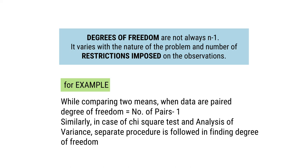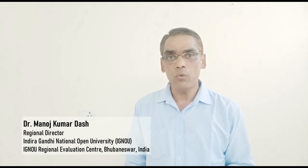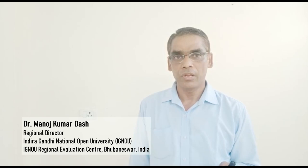For example, while comparing two means when data are paired, degree of freedom is equal to the number of pairs minus 1. Similarly, in the case of chi-square test and analysis of variance, a separate procedure is followed in finding the degree of freedom. Details about it will be discussed in the next week. I hope the concept is clear — how to find out and assess the degree of freedom, how to find out the level of confidence and the critical value. You are going to respond to the forum questions, review the document, and finally assess yourself with a small self-check test. I hope you will enjoy this topic and will be able to apply it in your research program. Wish you all the best.